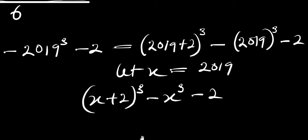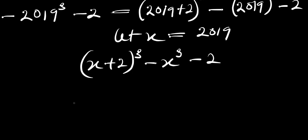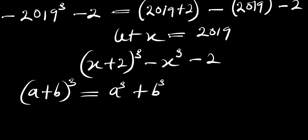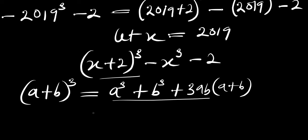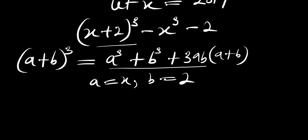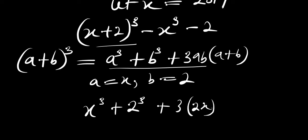At this point we need to apply this identity: (a plus b) raised to the power of 3 equals a³ plus b³ plus 3ab times (a plus b). In this case, our a equals x and b equals 2. So we insert it: x³ plus 2³ plus 3 times 2x times (x plus 2).